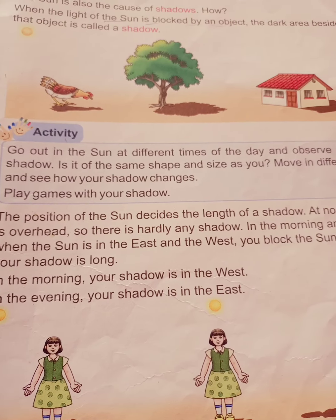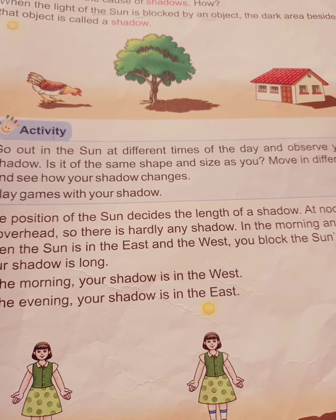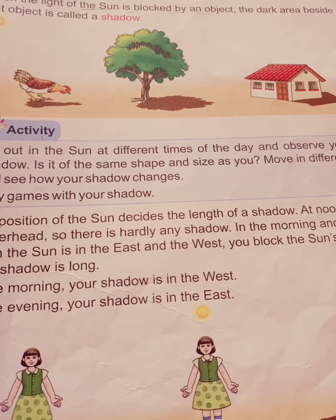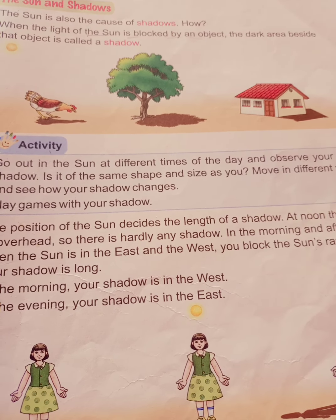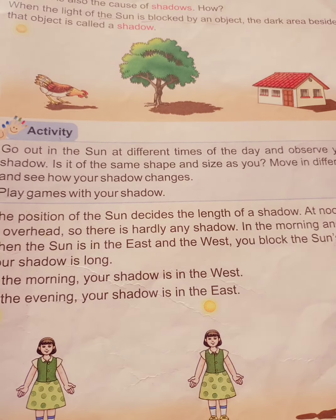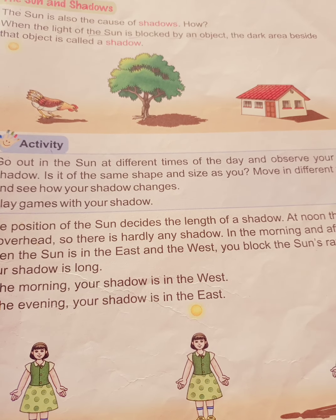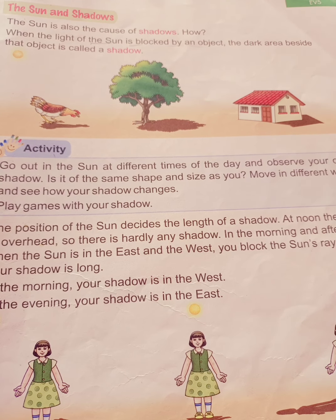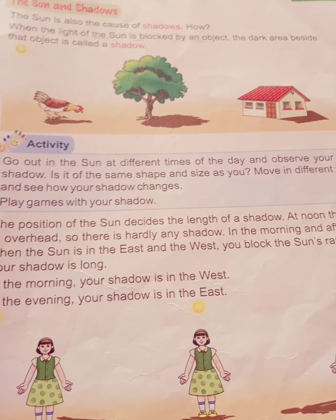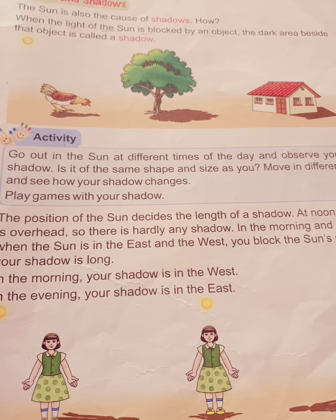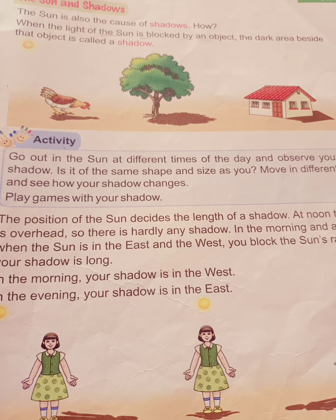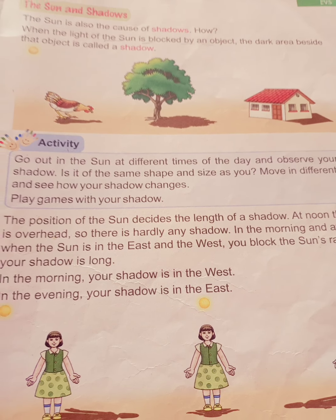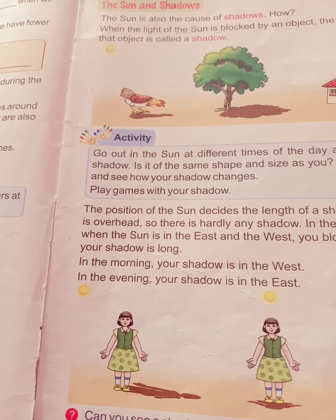The position of the sun decides the length of a shadow. At noon, the sun is overhead, so there is hardly any shadow. In the morning and afternoon, when the sun is in the east and the west, you block the sun rays and your shadow is long. In the morning, your shadow is to the west. In the evening, your shadow is to the west. This is shown in the picture on page 169.